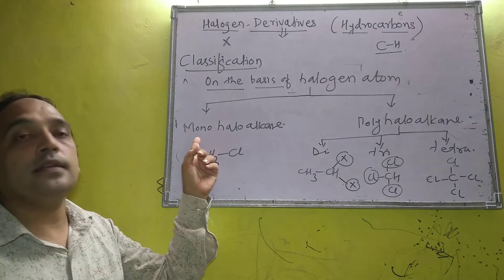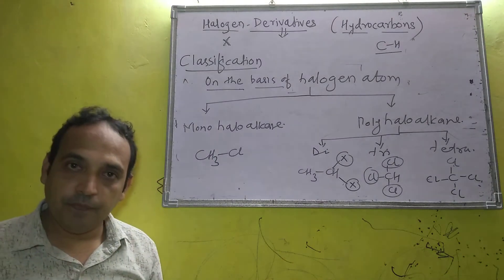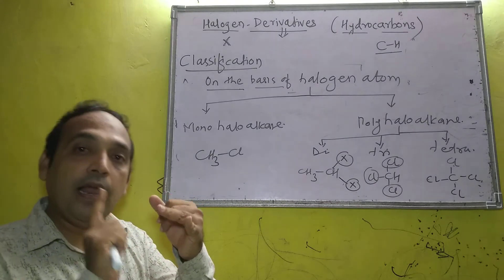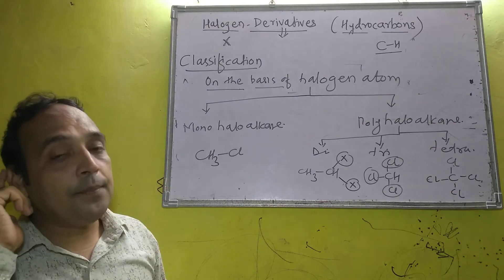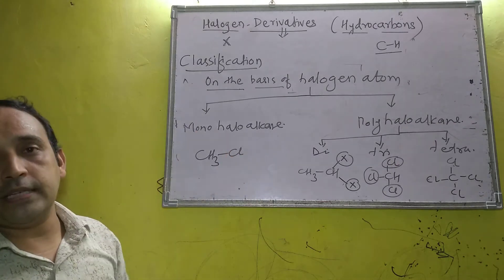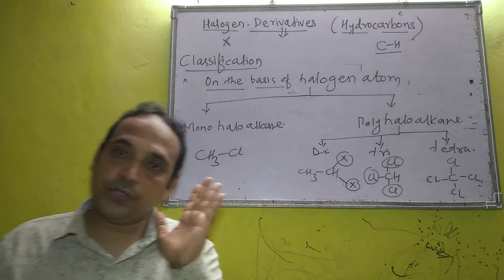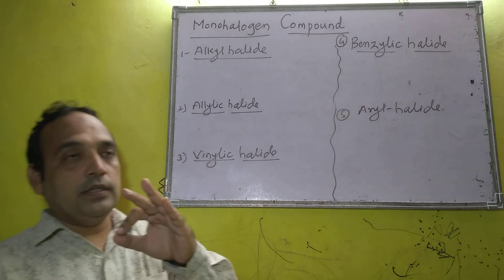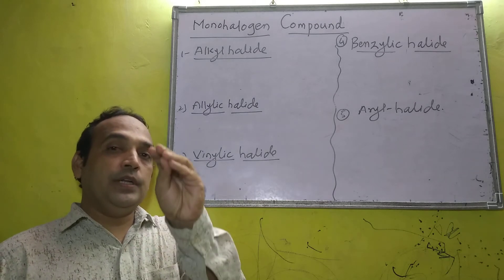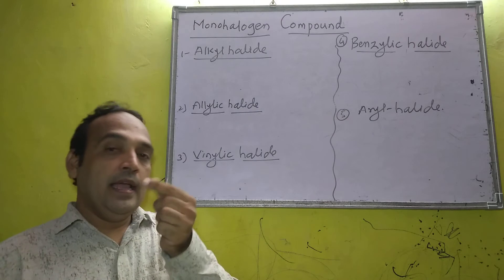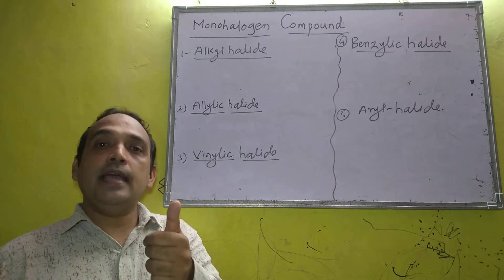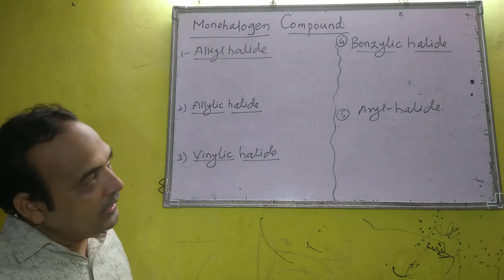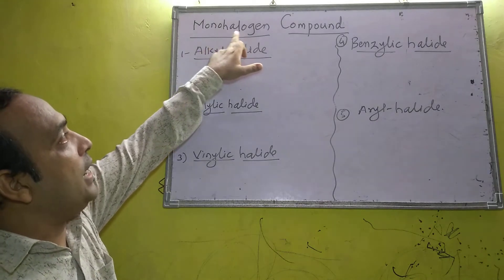Now we are going to start the classification of monohalogen compounds. That monohalogen compound may be from alkane, alkene, alkyne, or aromatic compounds. This is the third type of classification — classification of monohalogen compounds. First is on the basis of skeleton; second is on the basis of halogen atoms present.